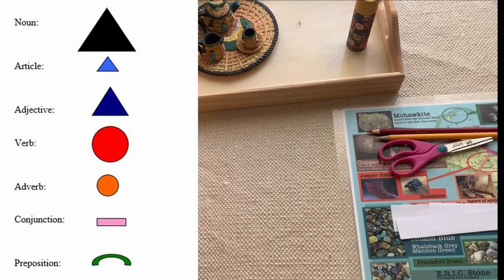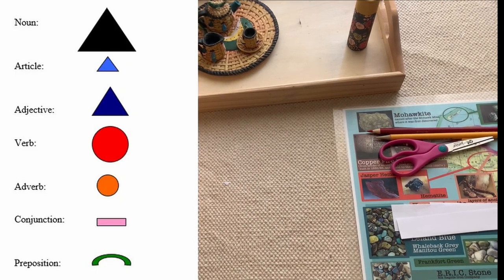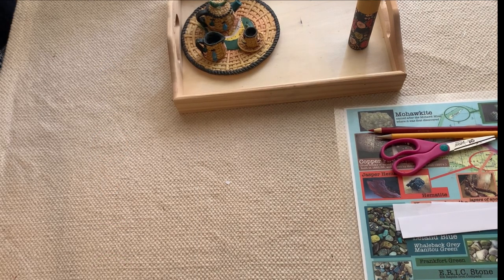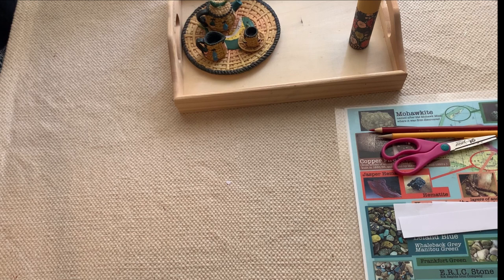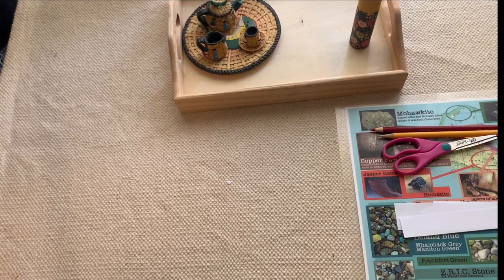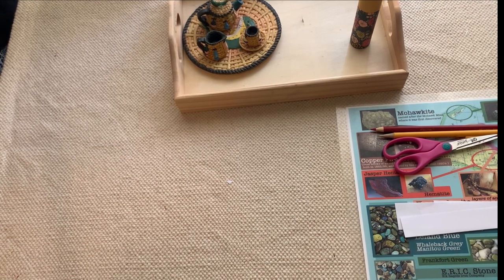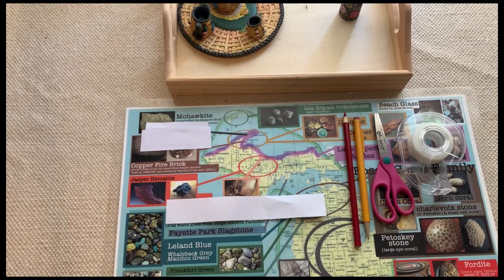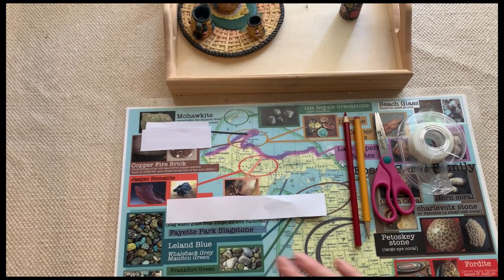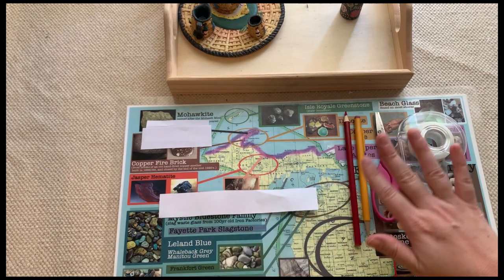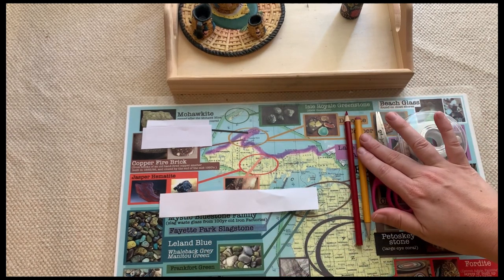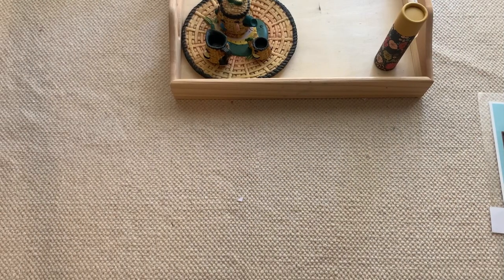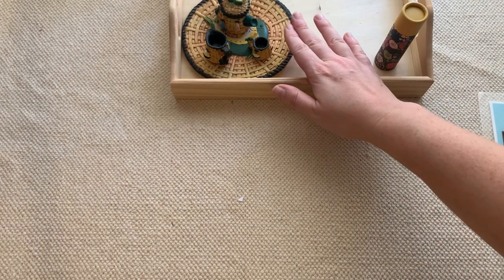If you're interested in any of the other lessons I have in my album for grammar, just let me know and leave a comment down below. The only lessons I don't have for the primary age group are pronouns and interjections. Before we begin, make sure you have a teacher tray or mat set up with strips of paper, a red pencil, a regular pencil, some scissors, and maybe some tape. For the preposition lesson, I'm going to use a little teapot set.